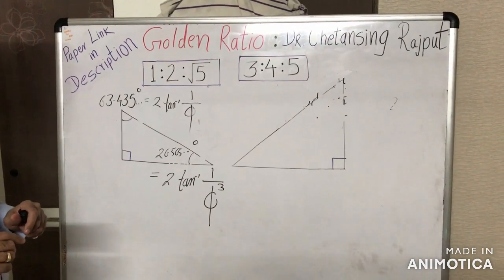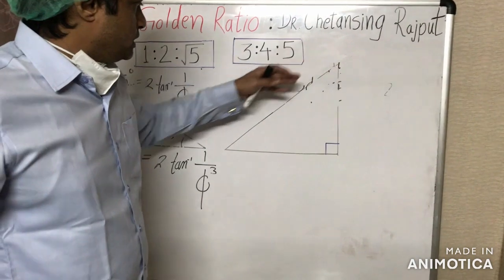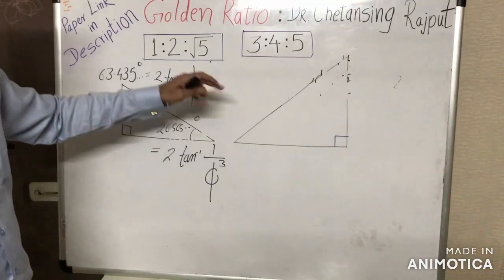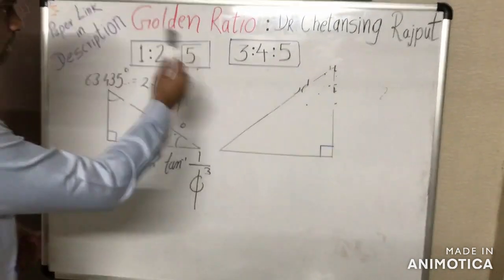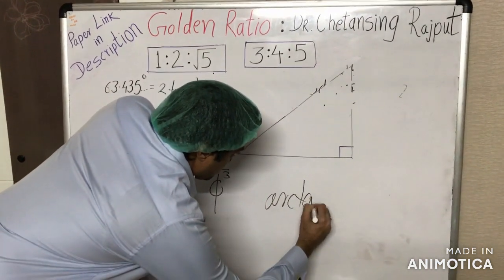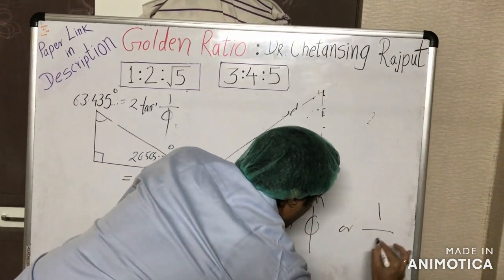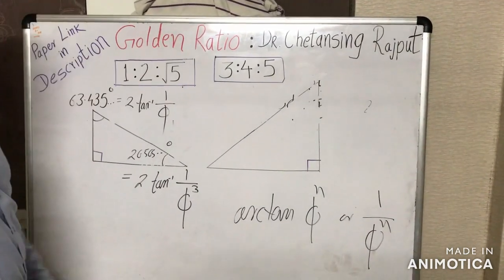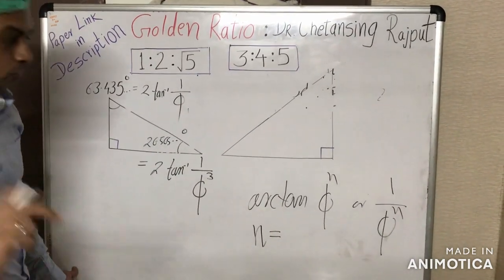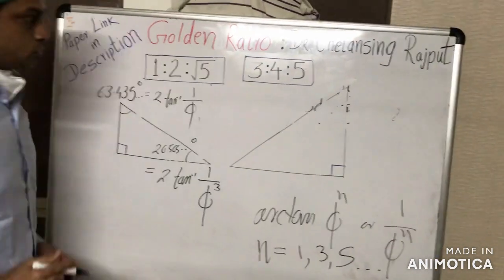More importantly, not just these two triangles, but the acute angles of the 3-4-5 Pythagorean triple can also be expressed in terms of golden ratio. All acute angles can be expressed in terms of arc tangent of φⁿ or 1/φⁿ, where n equals odd powers of golden ratio — n = 1, n = 3, or n = 5, and so on.